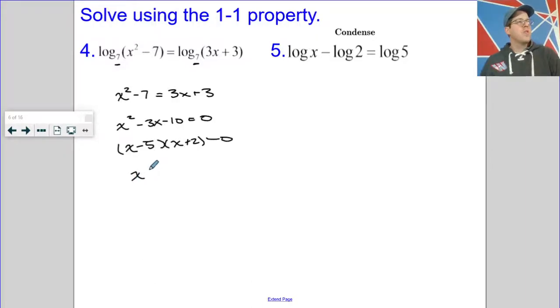So for this particular one, I get either 5 or negative 2. So when I plug those in, I'll start with 5. I'm going to get the log base 7 of 18. Now I don't know what that is, but it's between 1 and 2 because 18 is between 7 and 49.